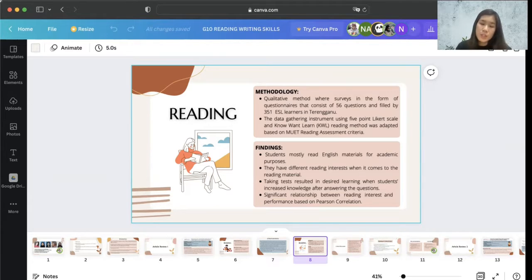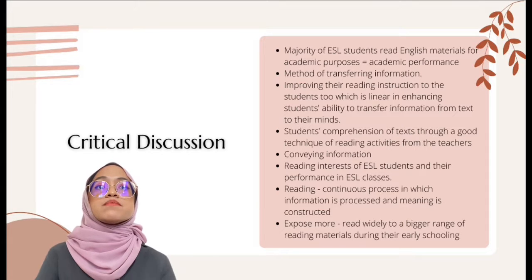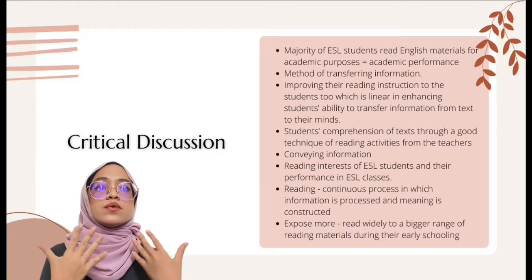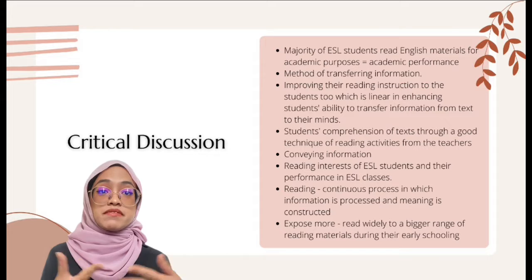The findings show that students mostly read English materials for academic purposes only and they have different reading interests when it comes to reading material. Taking tests resulted in desired learning when students increased knowledge after answering questions. This also shows a significant relationship between reading interest and performance based on Pearson correlation. As Benjamin Franklin's quote suggests, reading could be very great.